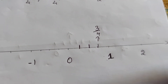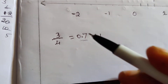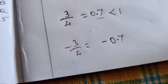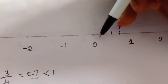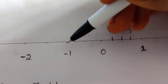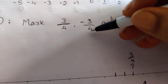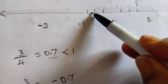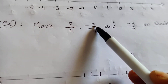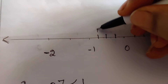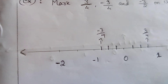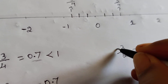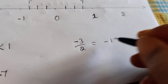So let's now mark the rational number minus 3 by 4. If you have minus 3 by 4, it lies between 0 and minus 1. We have 4 equal parts, so 3 lines are equal to 4 parts. Counting 1, 2, 3 — this is minus 3 by 4.